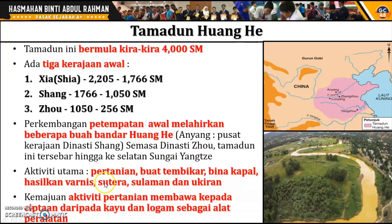Aktiviti utama masyarakat Tamadun Huanghe ialah pertanian. Selain itu, pembuatan iaitu membuat tembikar dan membina kapal. Masyarakat tamadun ini juga mula menghasilkan sutera, sulaman, dan ukiran. Disebabkan kemajuan aktiviti pertanian, lahirlah ciptaan-ciptaan baru, di mana peralatan terutamanya peralatan pertanian mula dibuat daripada kayu dan logam. Ini merupakan sumbangan tamadun ini kepada dunia. Sumbangan-sumbangan ini akan dibincangkan dengan lebih lanjut dalam sesi berikutnya.